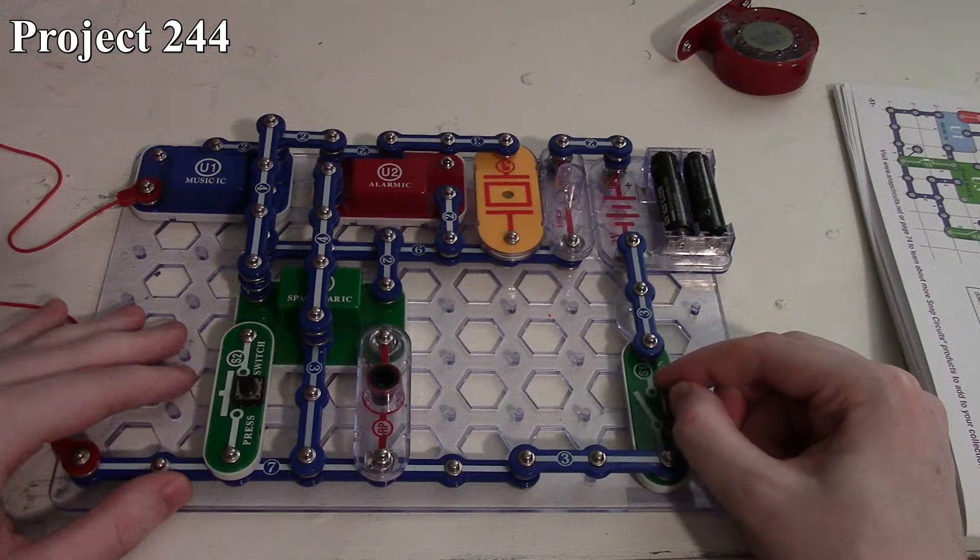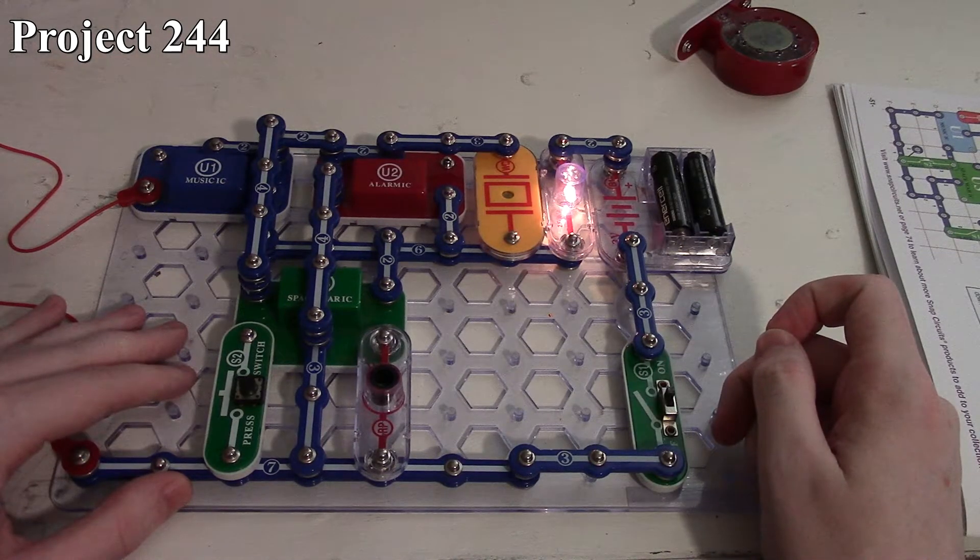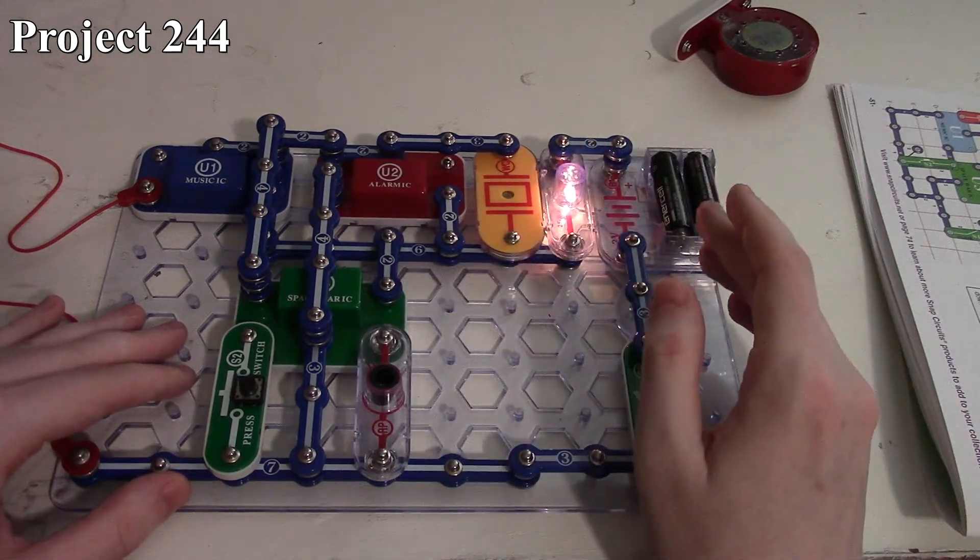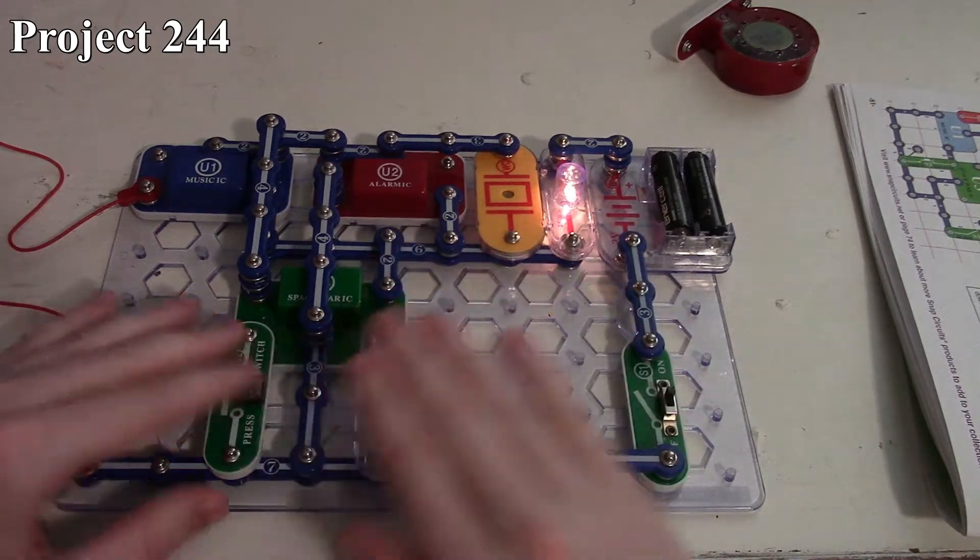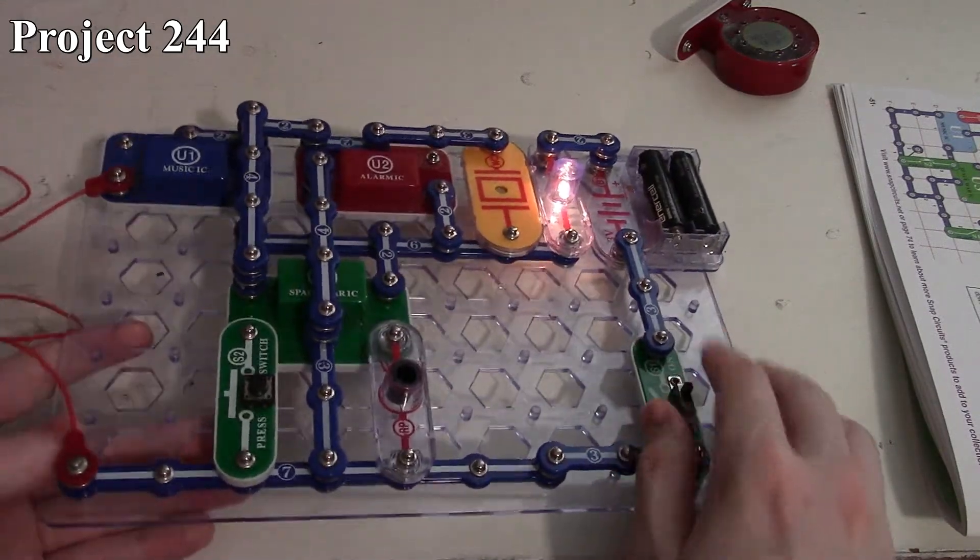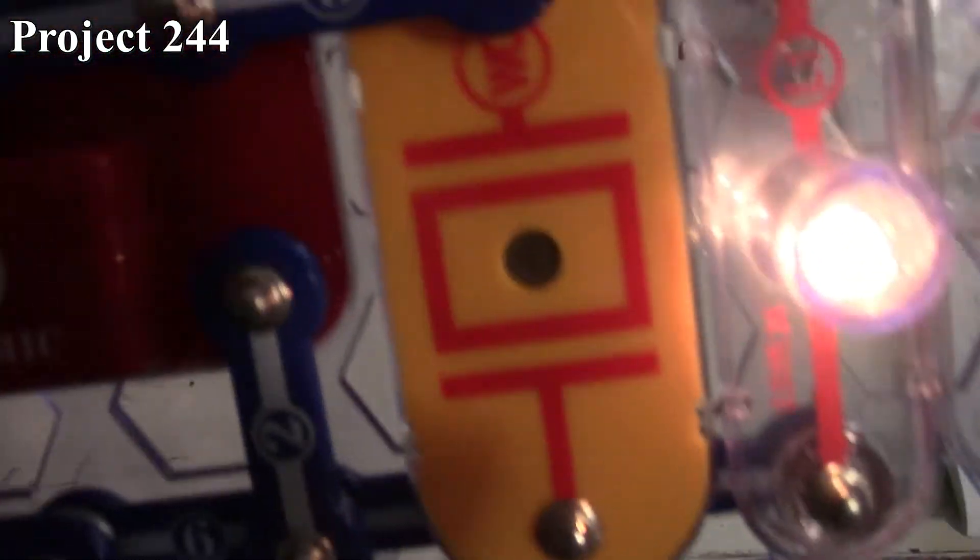If you remember from my inventory and troubleshooting video, this connection point on the Alarm IC does not behave correctly compared to points 2 and 3 over here. When we turn the circuit on this time, again, our light lights up, and we can still change all our sounds. But of course, now the sounds are a lot quieter because they're going out on the whistle chip.